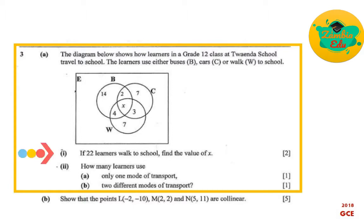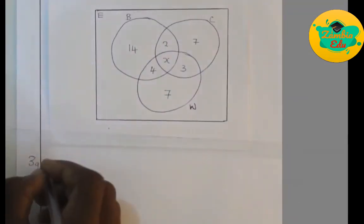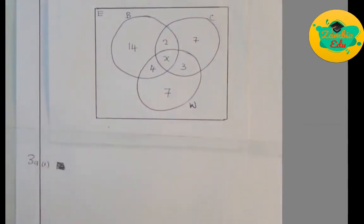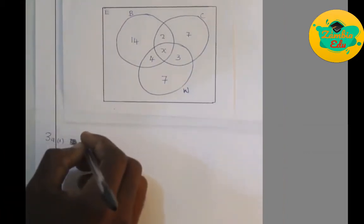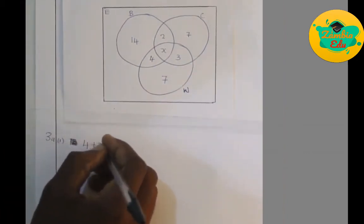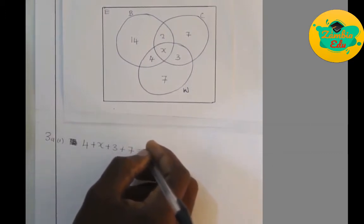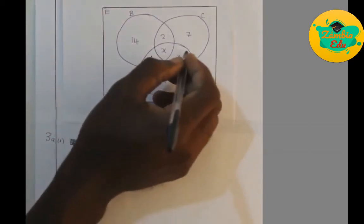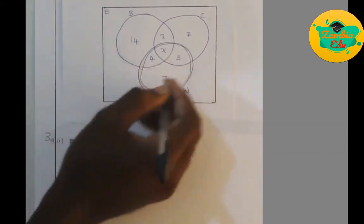For question 1, the 22 given is the total number of learners who walk to school. To find X, we add everything under the set for those that walk: 4 plus X plus 3 plus 7, and that should be equal to 22. We are only considering the people that walk.